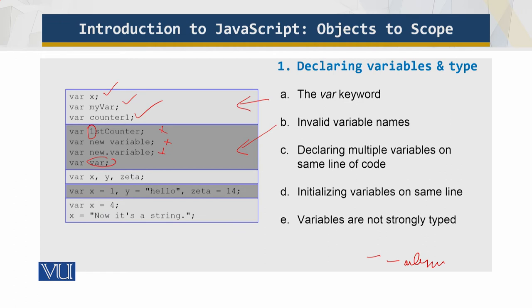You can declare multiple variables on the same line of code as follows, like this - multiple on the same line.